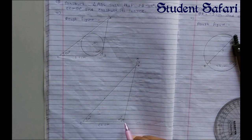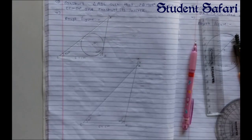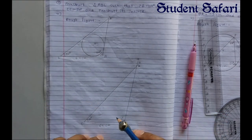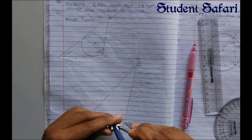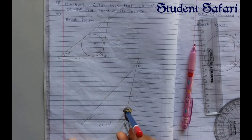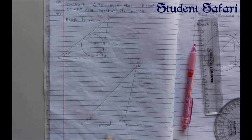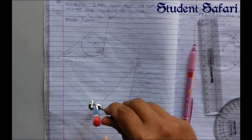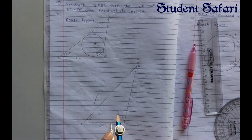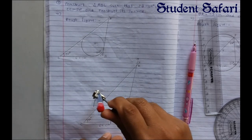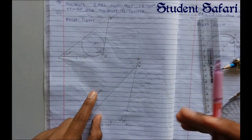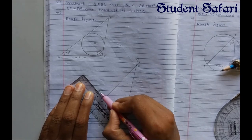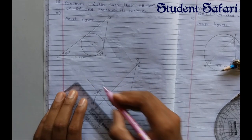Since we have to draw the incircle, I am bisecting angle C and angle B — you can bisect any two of angles A, C, and B. To bisect the angles: take some measurement in the compass, put it at angle B, mark arcs on both arms. Then take a greater distance and using those two arc points, mark intersecting arcs. Connect point B to this new intersection point to get the bisector of angle B.